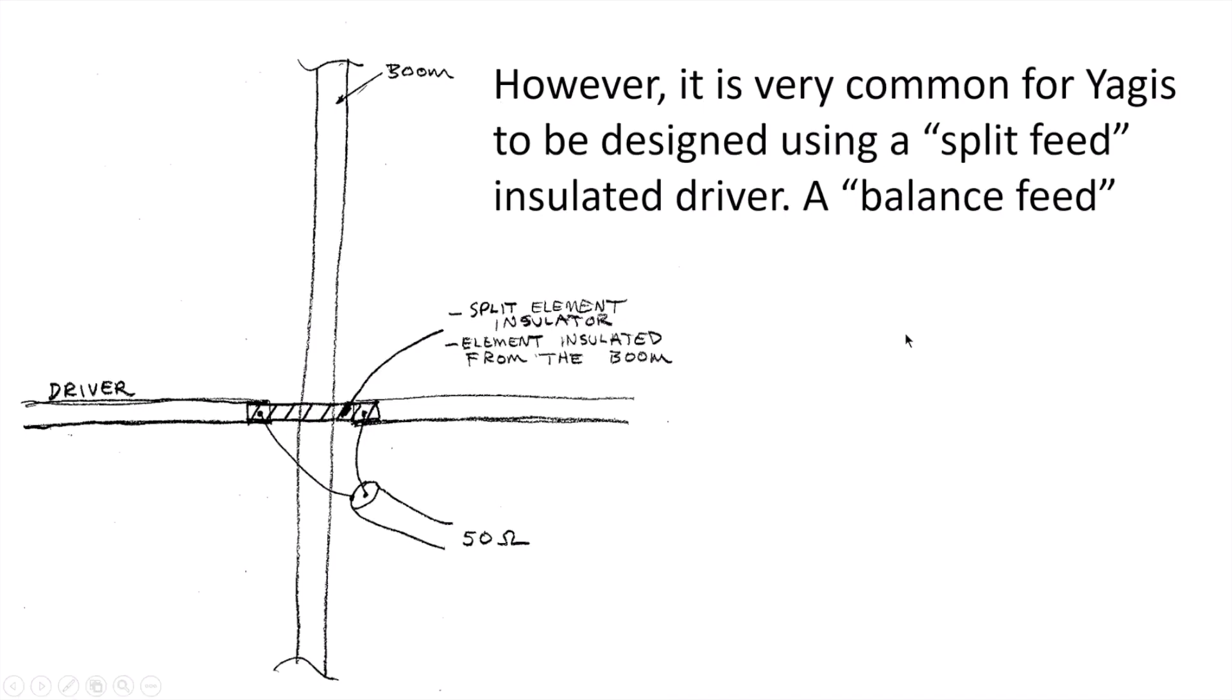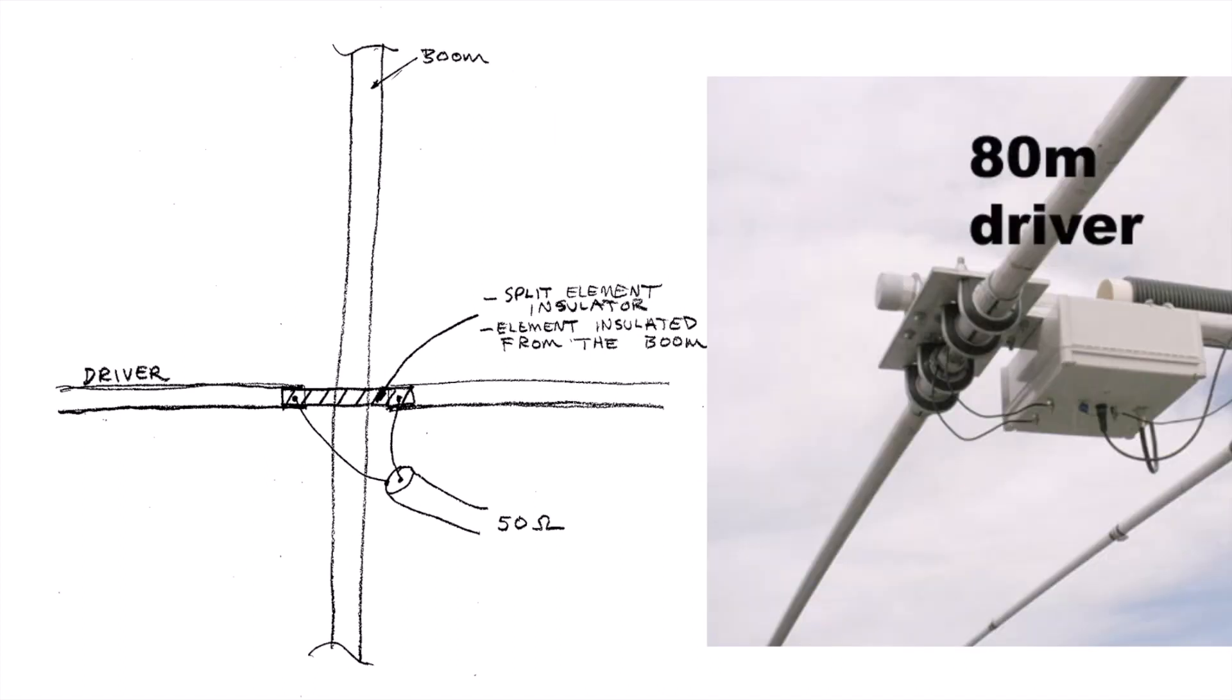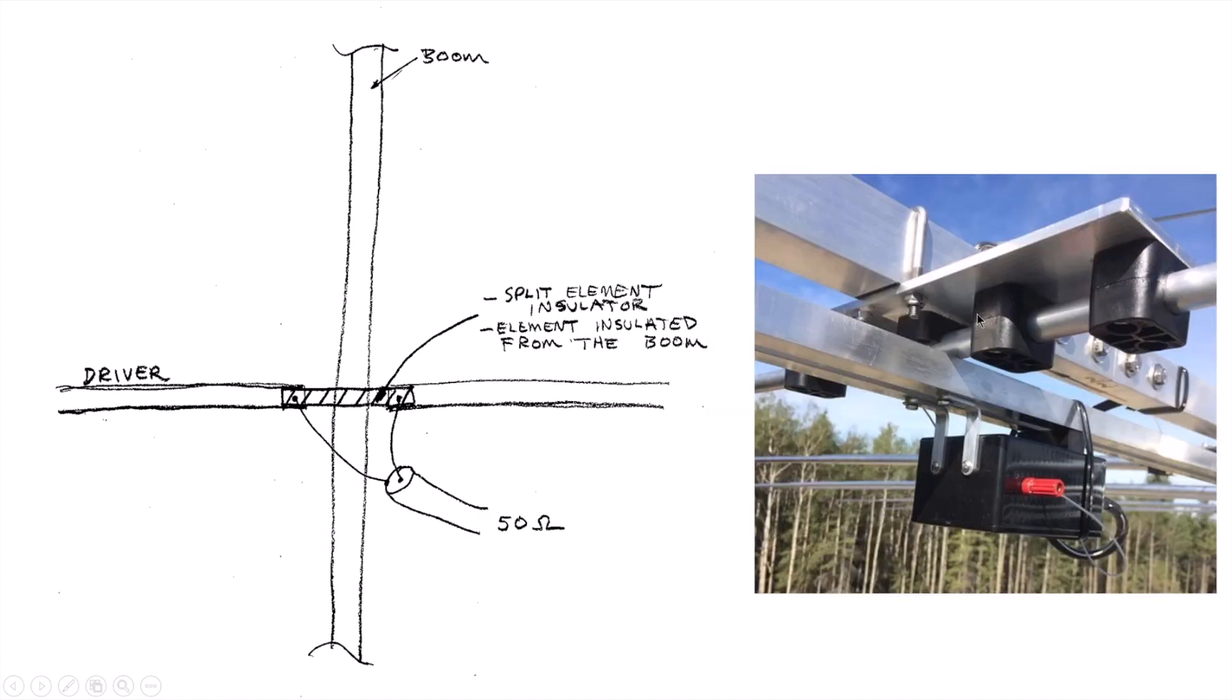However, it's very common for Yagis to be designed using a split feed insulated driver. This is a balanced feed system. The driven element is split in the middle, usually with a fiberglass or other insulating insert between the two dipole halves. The element is insulated from the boom with either plastic or polymer lined clamps. This is a photo to the right of my 80 meter driver. You can see these insulated clamps which hold the driver to the boom. This is the OptiBeam feed point, seeing the plastic insulators holding the element together. It's split with a fiberglass insert.